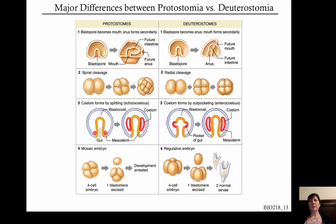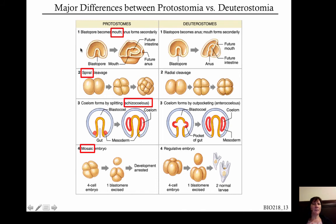There are many ways people have proposed to memorize which characteristics belong to protostomes and which to deuterostomes. If you can memorize the order of characters — fate of the blastopore, type of cleavage, coelomic cavity formation, and type of embryonic development — then just remember what each major feature is: forms the mouth first, spiral, schizocoely, and mosaic.